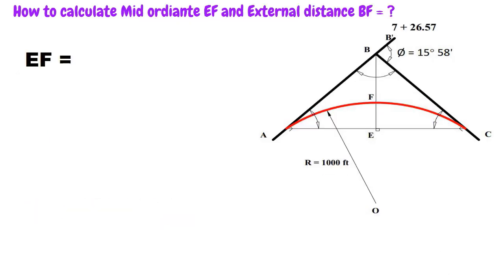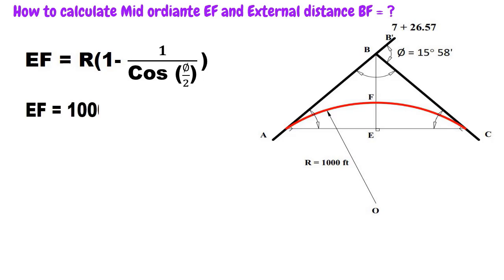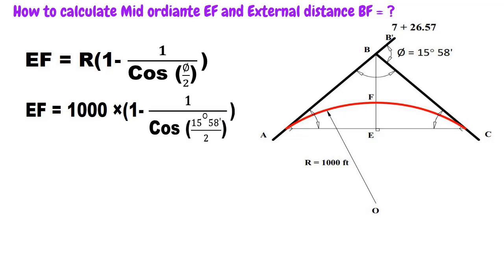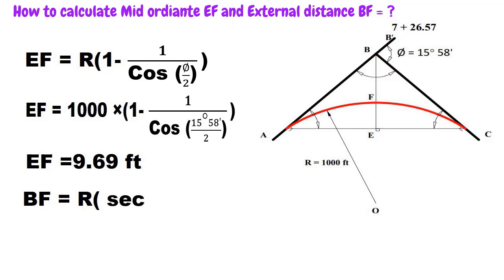Next, we find the mid-ordinate EF as shown in the figure. EF = R × (1 − cos(Δ/2)). Putting in the values — radius 1000 feet, deflection angle 15 degrees 58 minutes — by calculation the length of EF equals 9.69 feet.